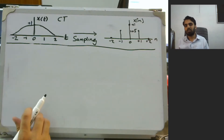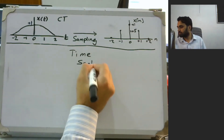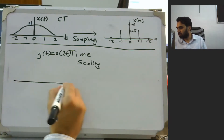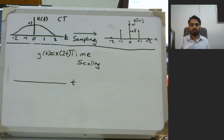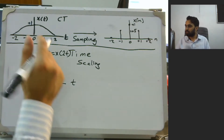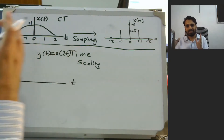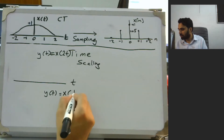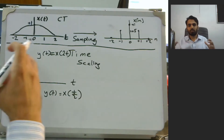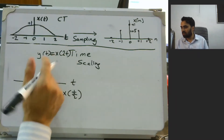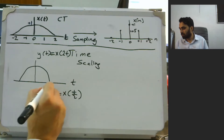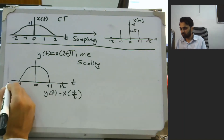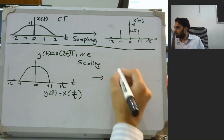The next time-domain operation is time scaling. y(t) = x(2t) means this signal will be compressed in time. At the same time, if y(t) = x(t/2), the signal would be expanded in time. If we compress the signal, the result would be compressed over here — for example, the value plus 1 appears at plus 2, so the whole signal is compressed. The same thing happens to the discrete-time signal.